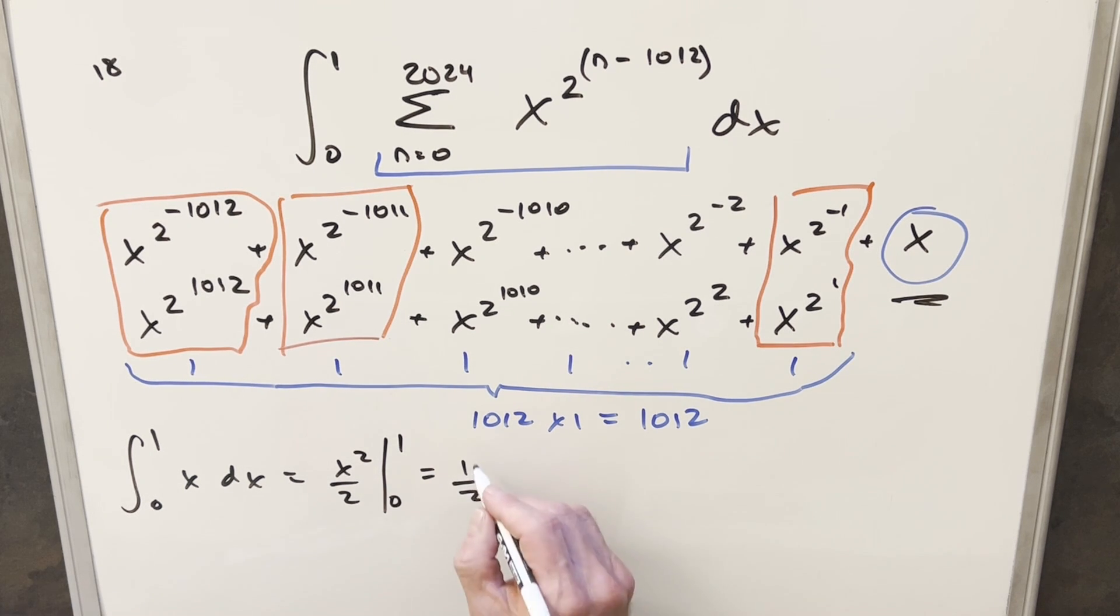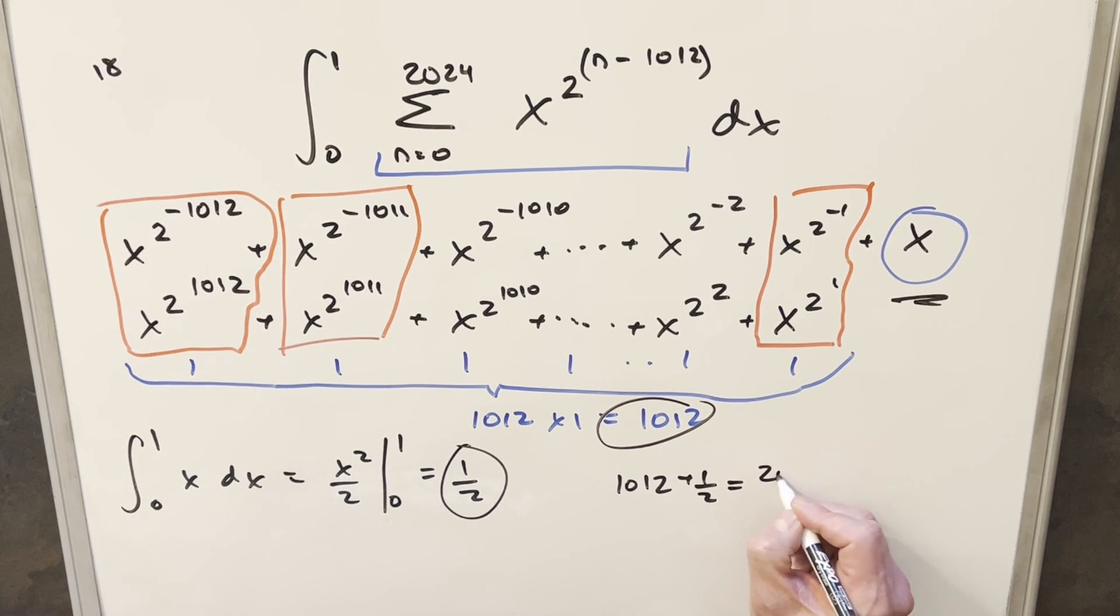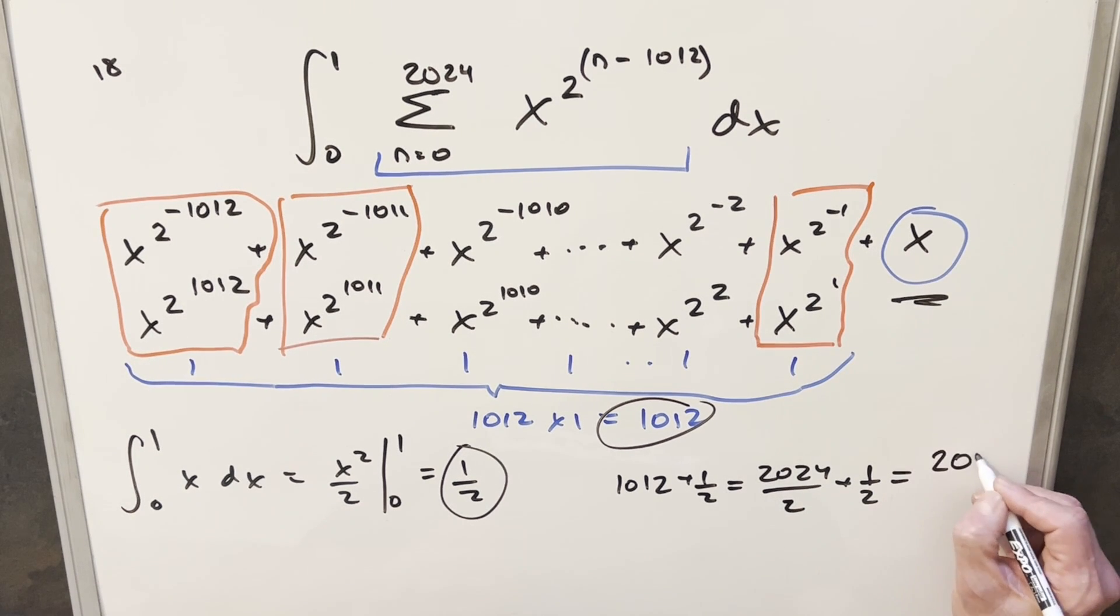So for our final solution, I just need to add this piece to this piece. So we're adding 1012 plus 1 half. I can get a common denominator, that's 2024 over 2 plus 1 half. And so for my final solution, we're going to get 2025 over 2.